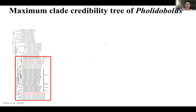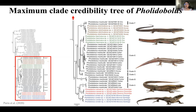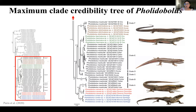Here we have the phylogeny of Pholidobolus — a maximum clade credibility tree obtained from a partitioned analysis of mitochondrial and nuclear genes. The phylogeny supports the monophyly of the genus and also supports the monophyly of the four new species. Furthermore, the phylogeny splits Pholidobolus macbrydei into six different clades, which is consistent with the previous study. We named all these clades and new species as the Pholidobolus macbrydei species complex.